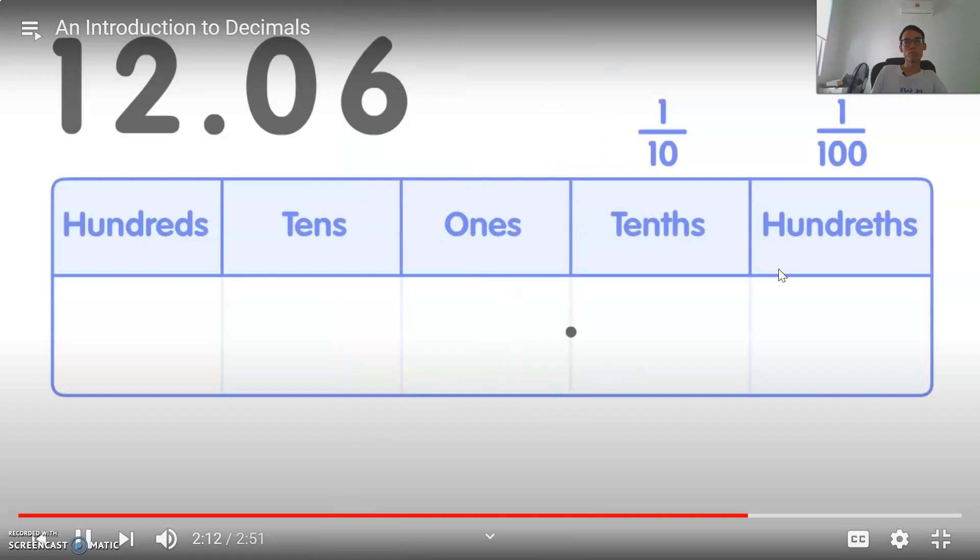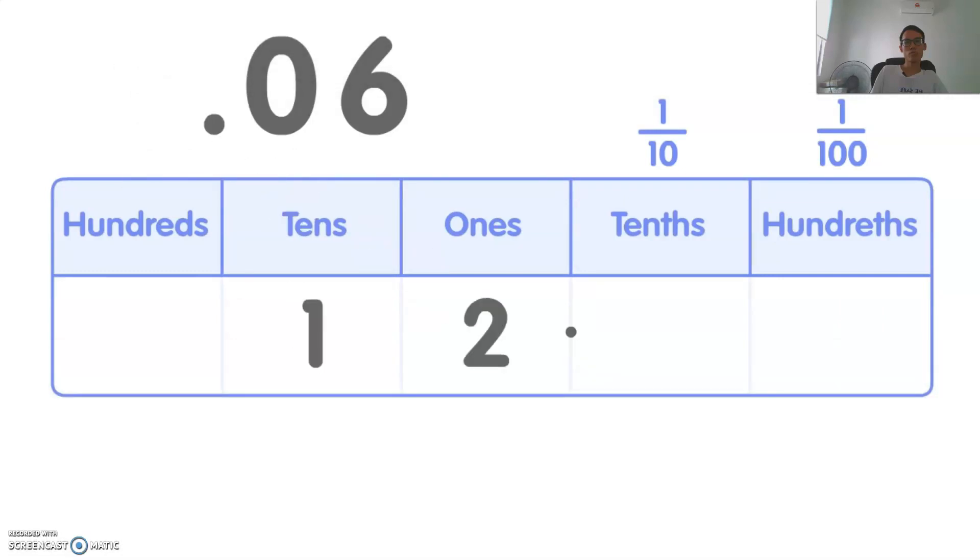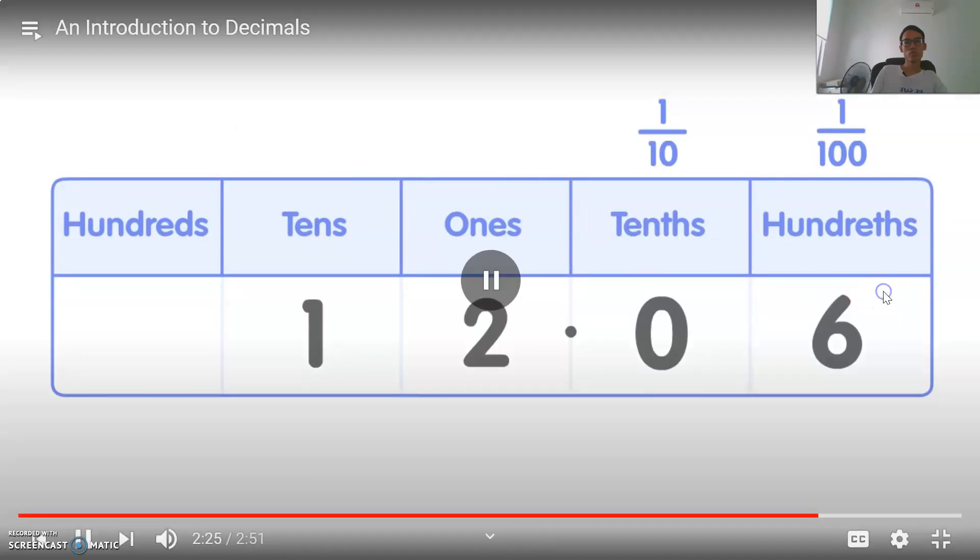Here's another example. The number twelve point zero six is made from one ten, two ones, and after the decimal point we have zero in the tenths place.